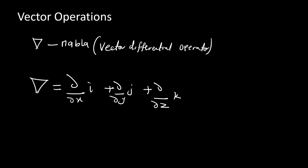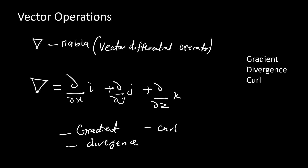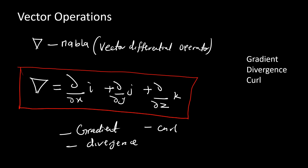Using NABLA, the vector operator, we can determine our gradient, our divergence, and our curl. So take note of this — we are going to be using NABLA in this tutorial. NABLA is defined as the partial derivative with respect to x in direction of i, plus the partial derivative with respect to y in direction of j, plus the partial derivative with respect to z in direction of k. So let's get started with the meaning of gradient, divergence, and curl.